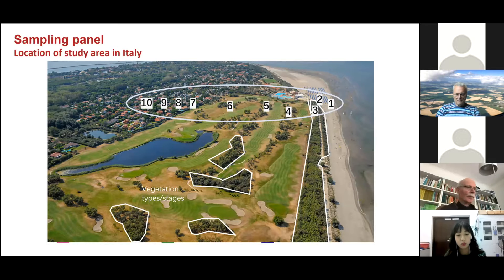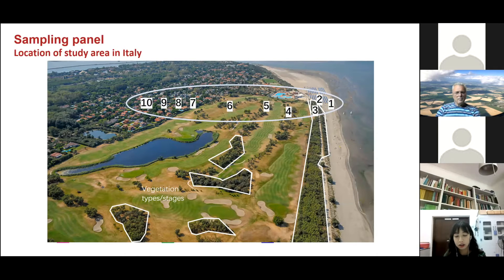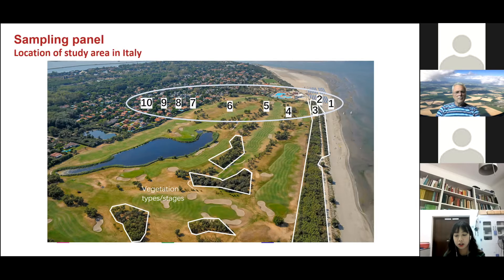We studied the soil of two series of vegetation — the natural one and the anthropogenic — along a transect from the forest to the seaside. There are 10 plots which were established in pairs on Albarella and Caleri respectively.